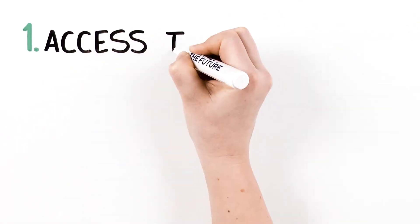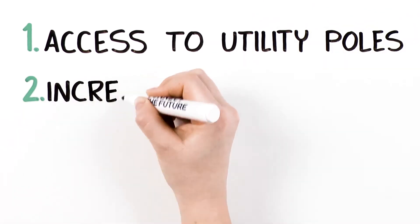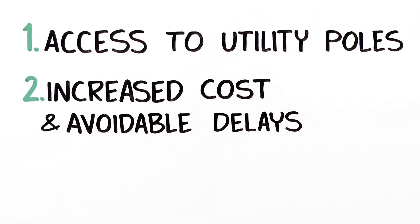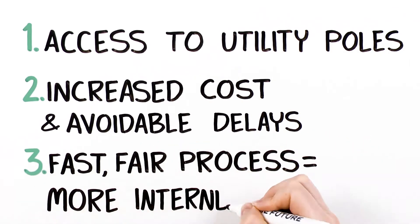First, we need a quick overview of how pole access works. Then, we'll show how that process can needlessly increase costs and cause avoidable delays, which have left too many Americans unconnected for too long. And finally, how a fast, fair pole attachment process will help.